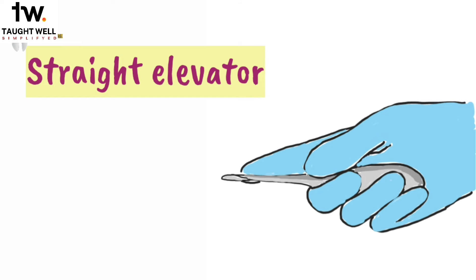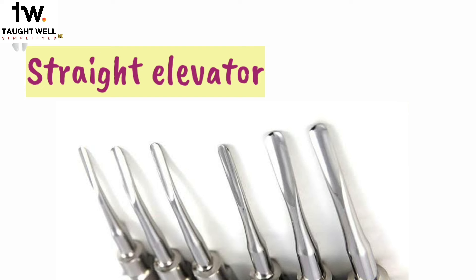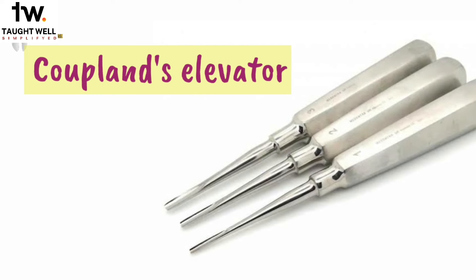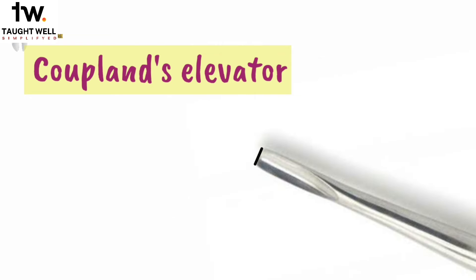Now let's see how to hold this elevator. It should be held like this with the index finger placed along the blade. This blade is not just one size — this elevator comes in different sizes depending on the width of the blade. If the teeth are widely spaced, or if we want to displace roots from their socket, we use elevators with a larger size blade. The small size straight elevator, like the number 301 elevator, is used when we are just starting to luxate a tooth before applying forceps.